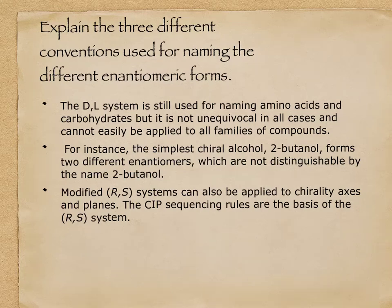Now we get to look at stereochemistry in food and how we label our different stereoisomers — our optical stereoisomers. There are three different conventions for naming these, and we'll look at them in more detail as we go. The first is the D and L system.